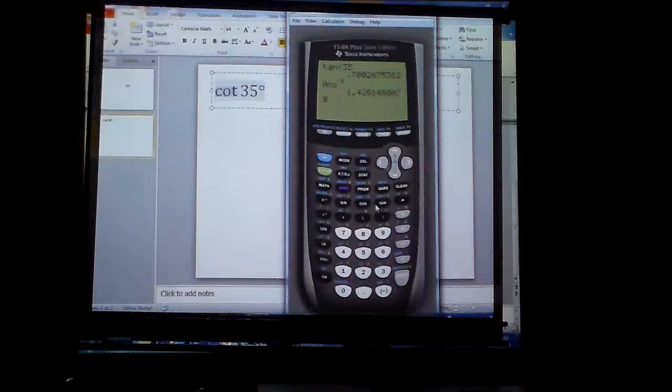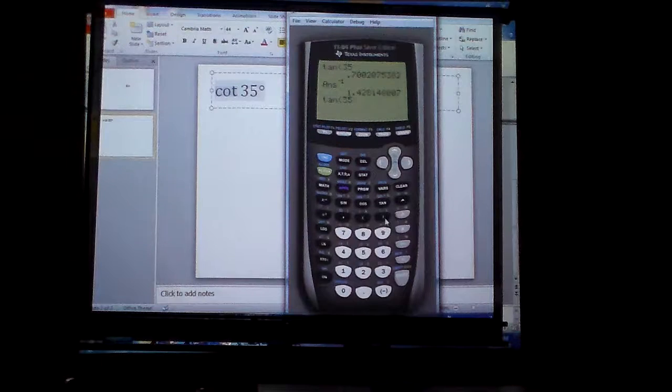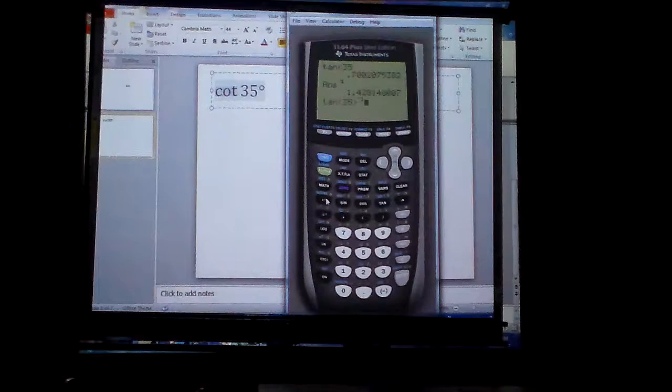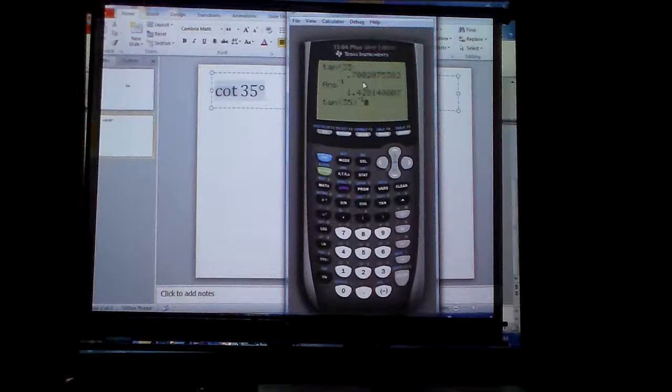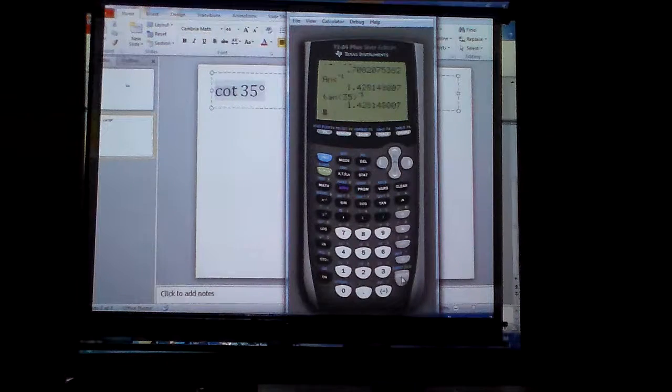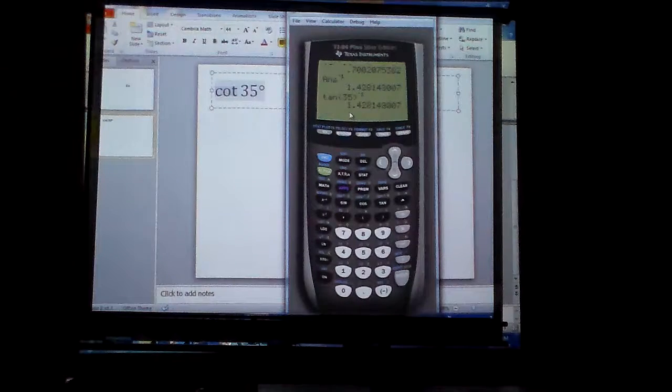I can do tangent, 35, make sure to close the parentheses, do X negative 1, because this will take the tangent of 35 and then reciprocate it automatically, and there's my answer. But the only way I can get cotangent is to do the reciprocal of tangent.